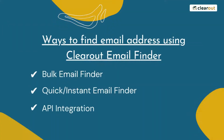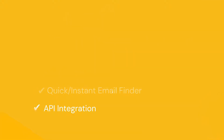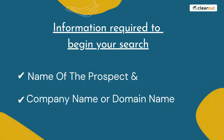Once you have created an account on Clearout, you can start finding emails in bulk, one by one, or through API integration. The only information you need to provide is the name of the prospect and the company or domain name. Let's have a look at how each of them works.